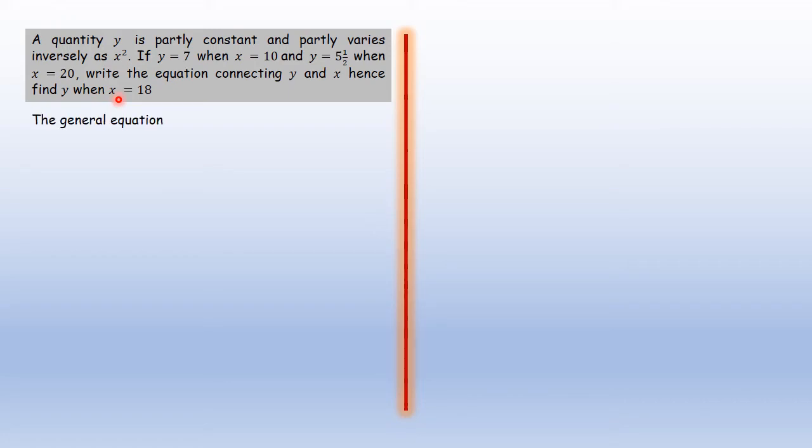So we're going to begin, first of all, with the general equation. The general equation is y = k + l/x². The reason for this is because we're told the quantity y is partly constant, so we just have a constant.